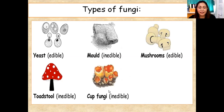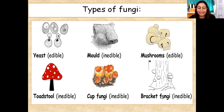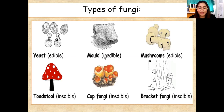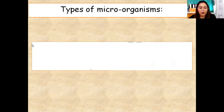Next we have cup fungi — you can see a lot of cup fungi in the forest, and cup fungi are inedible. The last one is bracket fungi. Bracket fungi are fungi that grow on trees — on the body, the stem, and the trunks. Bracket fungi are also inedible. So those are the types of fungi: yeast (edible), mold (inedible), mushrooms (edible), toadstool (inedible), cup fungi (inedible), bracket fungi (inedible).